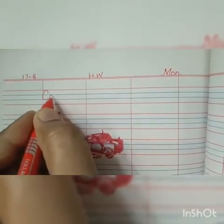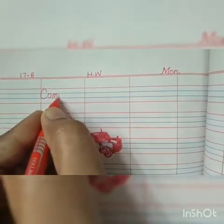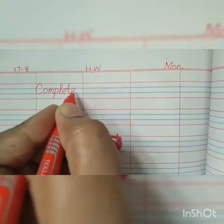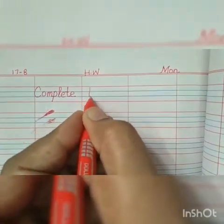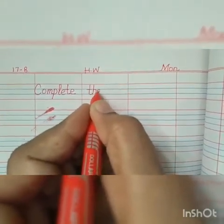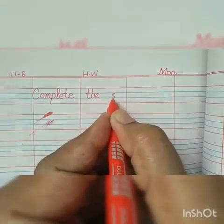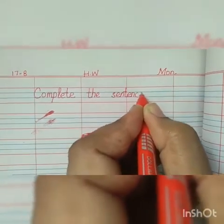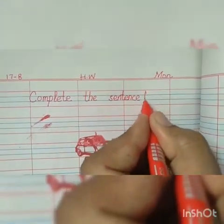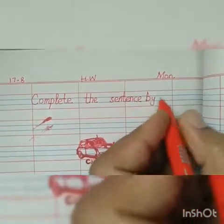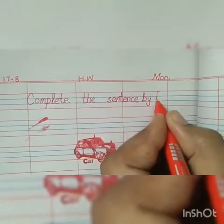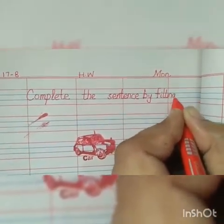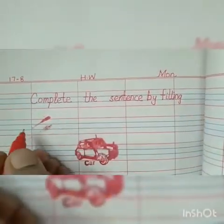Now write the question heading letter by letter: C-O-M-P-L-E-T-E — Complete. Then make a finger gap. T-H-E — The. Complete the. Then one finger gap: S-E-N-T-E-N-C-E — Sentence. Complete the sentence. Then one finger gap: B-Y — By. One finger gap. F-I-double L-I-N-G — Filling. By filling. Then come on the next line.